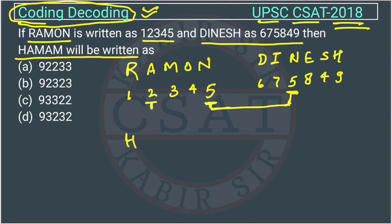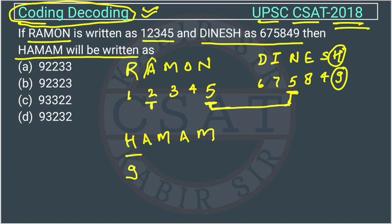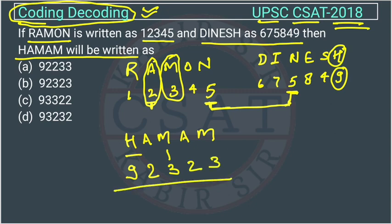Now we will find the code for H-A-M-A-M. Looking at the given data, H appears in DINESH and is coded as 9. A is coded as 2. M appears in RAMON and is coded as 3. So the full coding for HAMAM is: H=9, A=2, M=3, A=2, M=3.